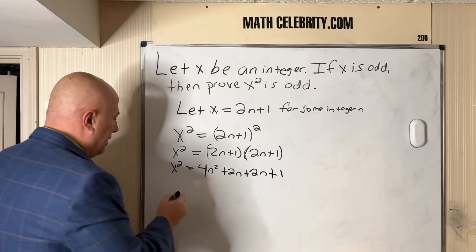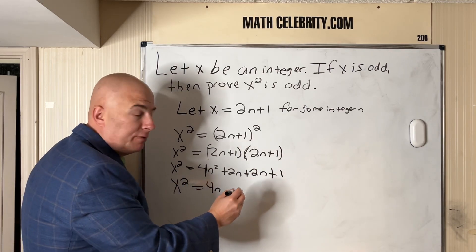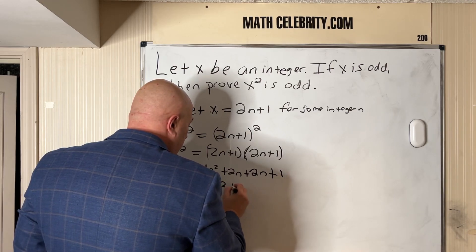So if we clean this up and simplify and group terms, 2n plus 2n is 4n, so 4n² plus 4n plus 1.